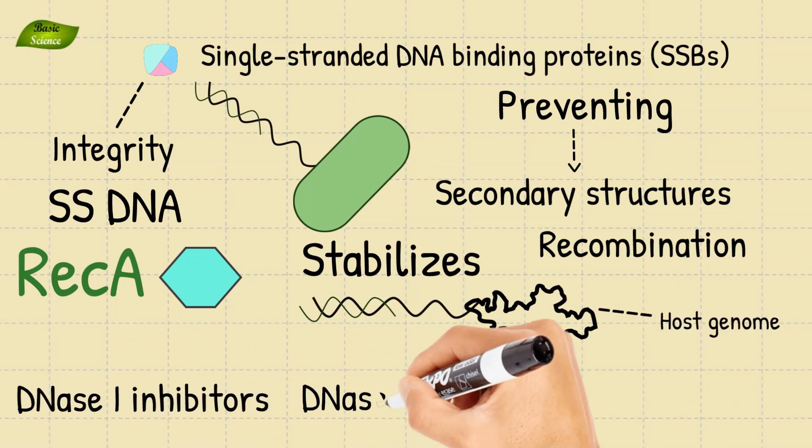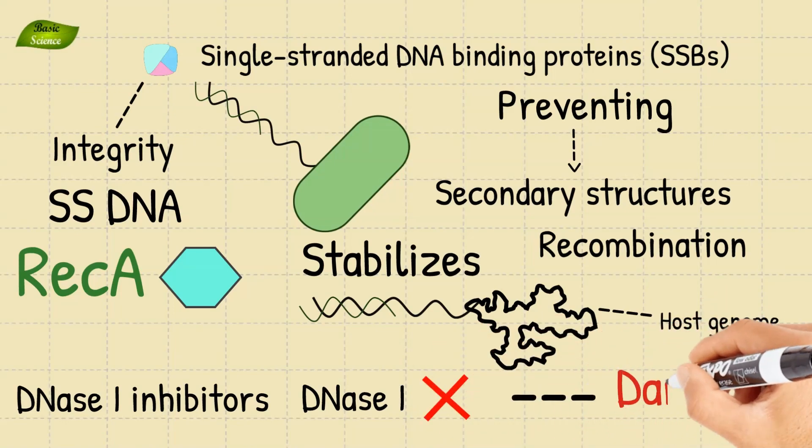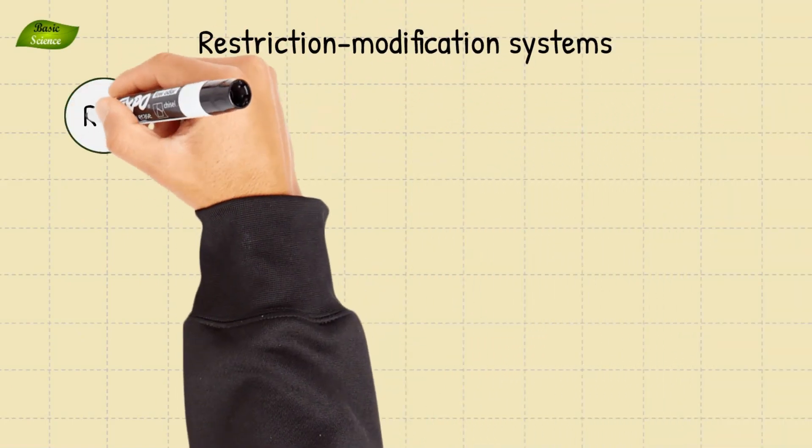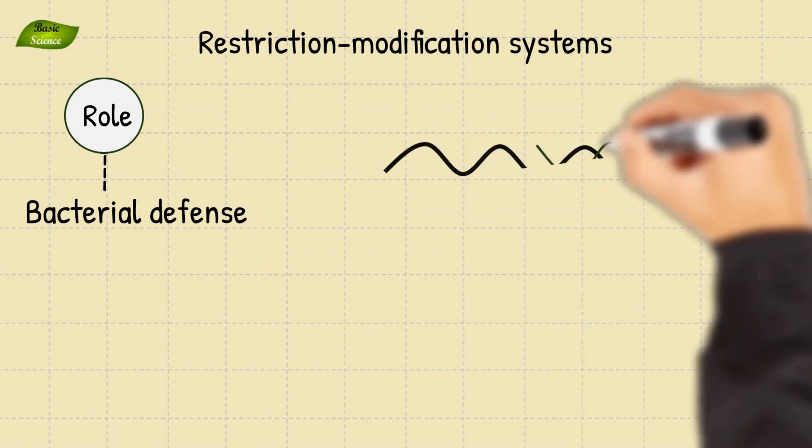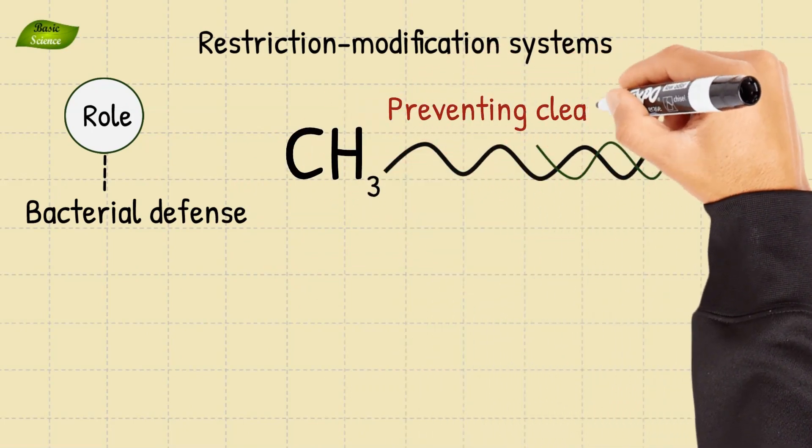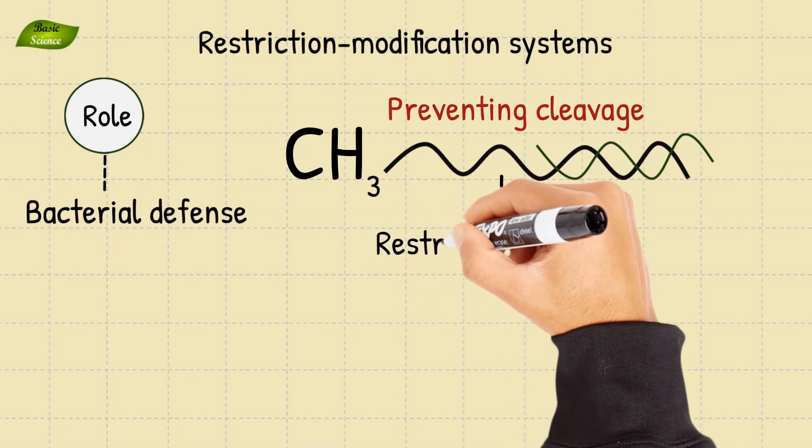DNA inhibitors specifically block the action of DNases, protecting it from damage. Restriction modification systems, known for their role in bacterial defense, can also contribute by methylating the incoming DNA and preventing cleavage by corresponding restriction enzymes.